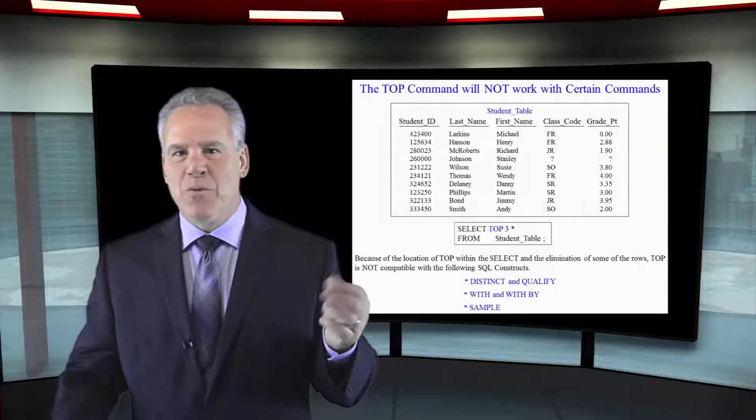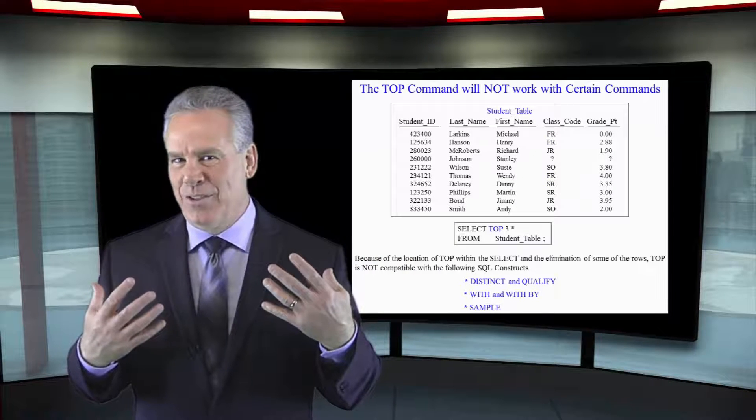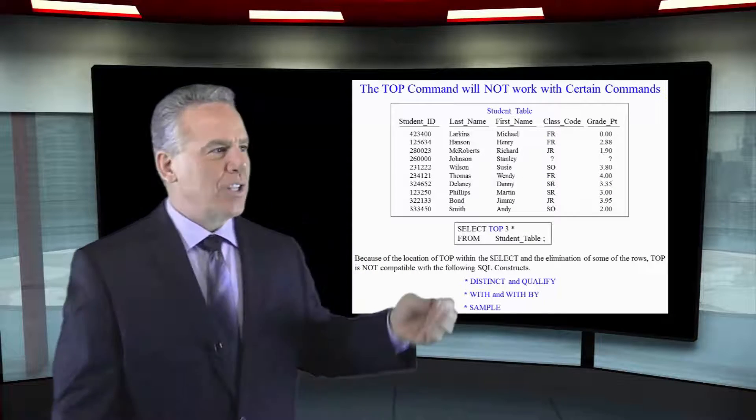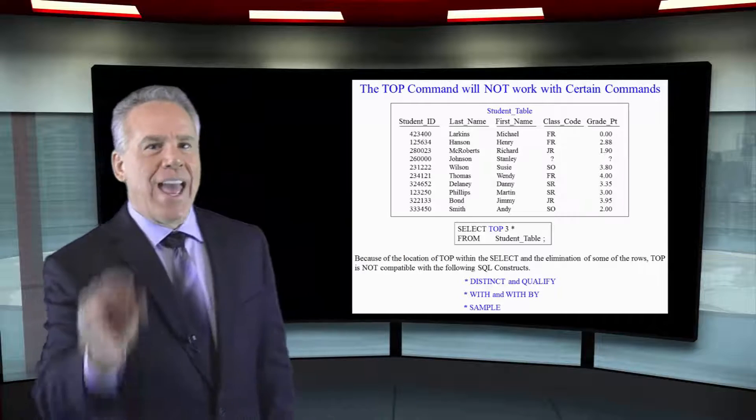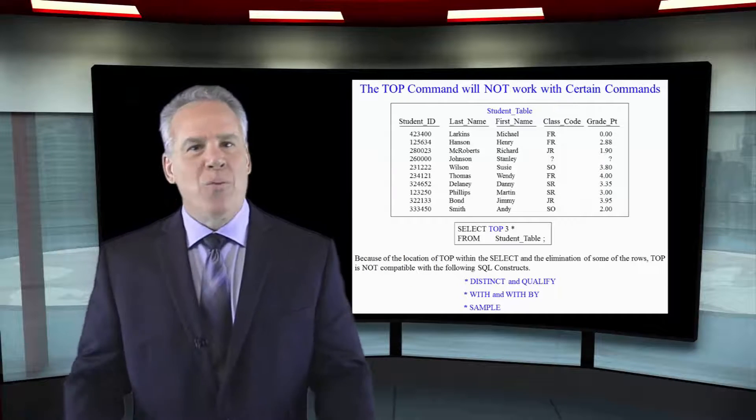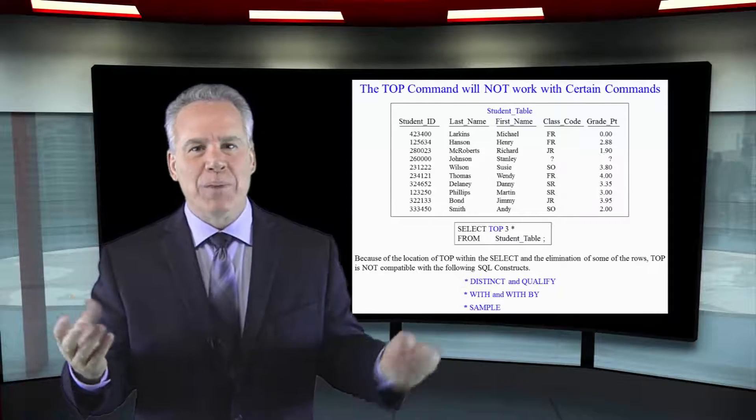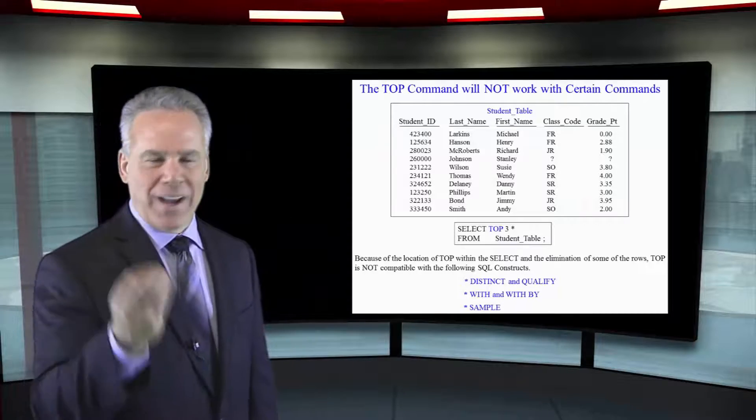Select asterisk from student table would bring back all the columns in the student table. Here we're saying select top three asterisk from student table. We're going to get a random three rows because we did not have an order by statement.